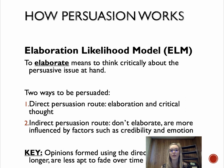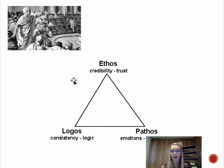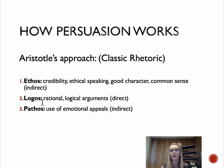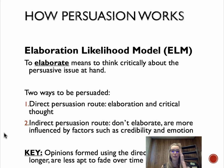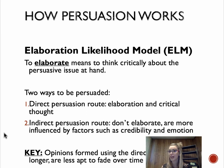The first theory we're going to talk about is the Elaboration Likelihood Model, shortened to ELM. It is used to elaborate — meaning to think critically about the persuasive issue at hand. There are two ways you can be persuaded. The direct persuasive route ties back to logos — those facts. Direct persuasion involves elaboration and critical thought. Then we have the indirect persuasion route, where you don't elaborate as much and are more influenced by factors such as credibility and emotion — that ethos and pathos. The key here is that opinions formed using the direct route last longer and are less apt to fade over time.